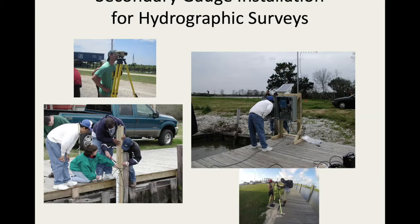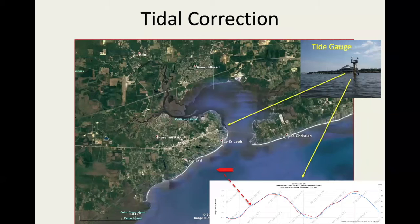You have to do an installation of temporary tide gauges. These are photographs of a USM class installing a temporary tide gauge in coastal Mississippi. They install a pressure gauge on a wall, with a data logger and solar panel for power, leveling it in to established benchmarks and conducting a GNSS survey to measure tides relative to a geodetic ellipsoid.